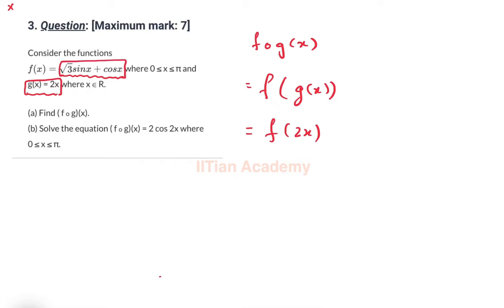Now what is f(x)? f(x) is √3 sin x + cos x. So wherever there is x, we replace it by 2x. So it will be √3 sin 2x + cos 2x.